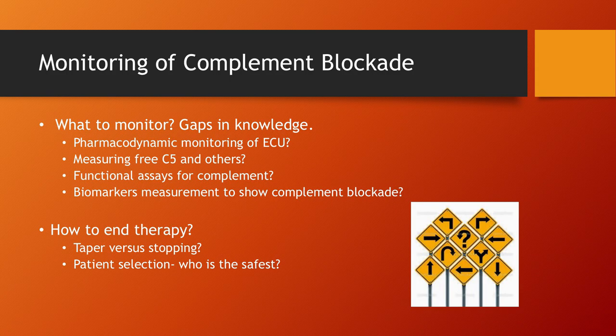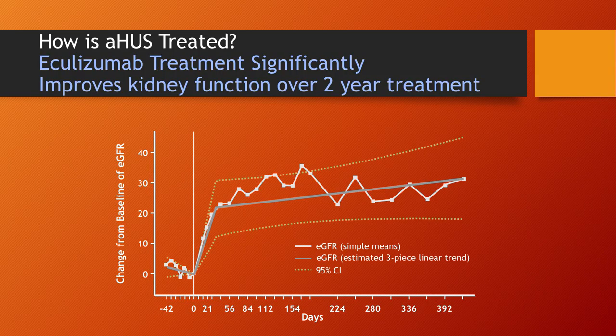Regarding how to end therapy — taper versus stopping. A couple of years ago many physicians preferred to taper: every two weeks, then monthly, then every two months. But for some patients, after two weeks they have no drug levels, so tapering doesn't mean anything until you start monitoring drug levels. We don't know who the safest patient is right now. In the registry at 392 days, for patients who were on dialysis before ECU, kidney function still improved — a 20% change from baseline — even after two years, which is really reassuring.